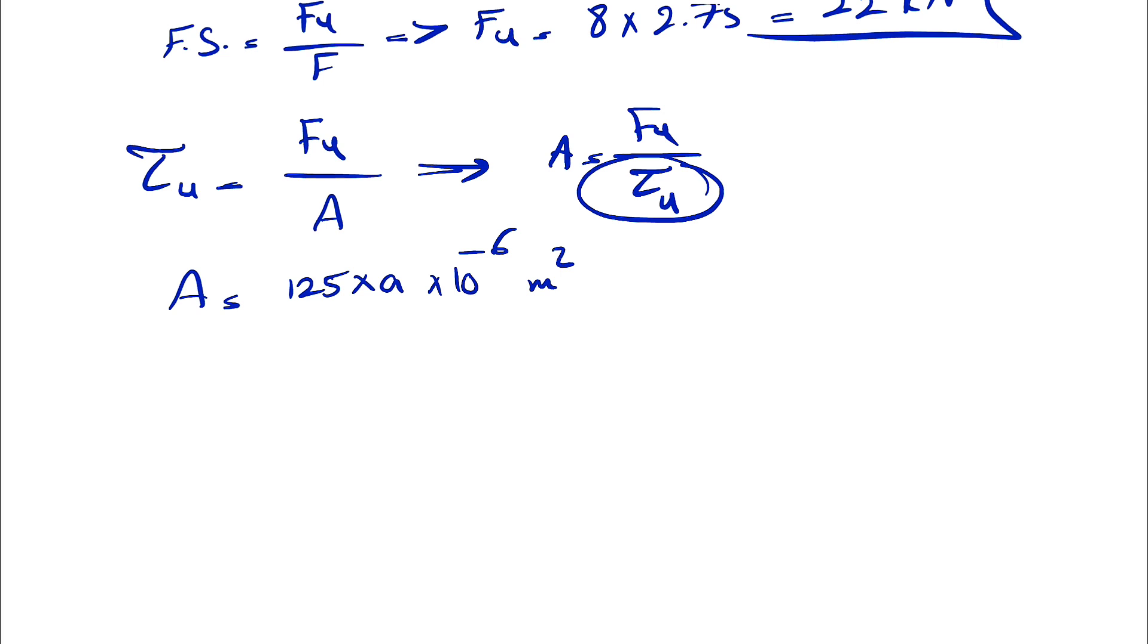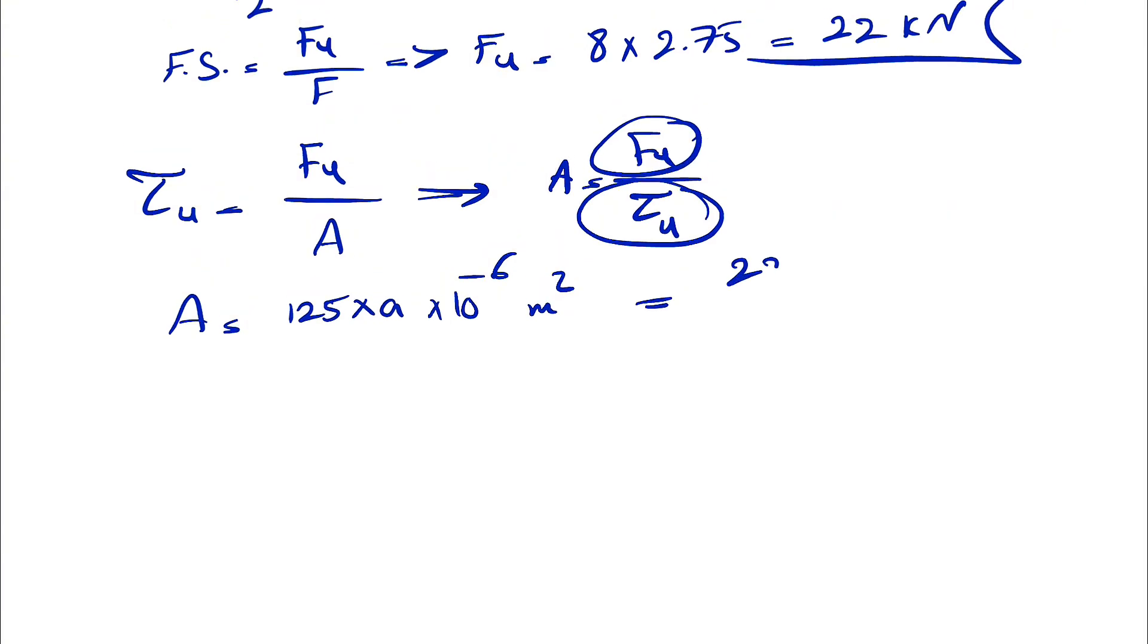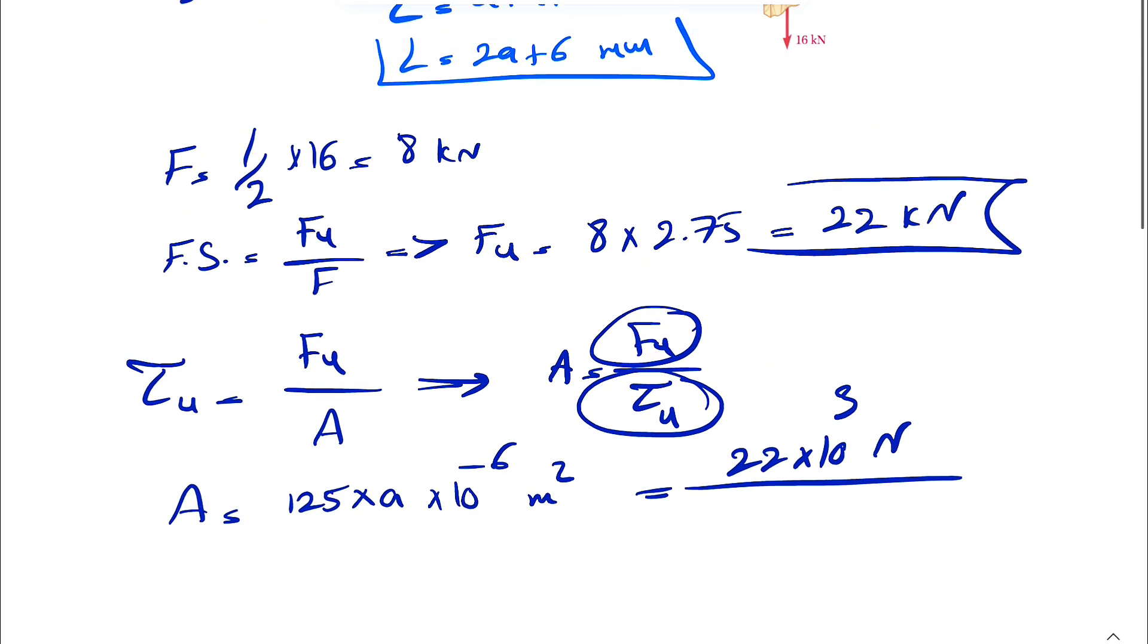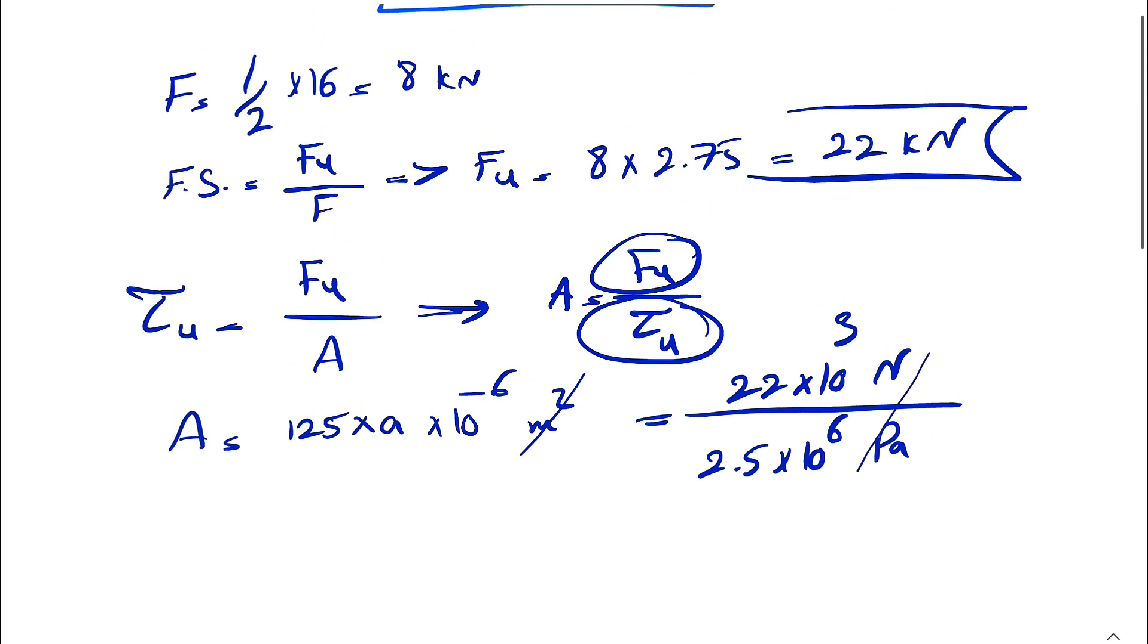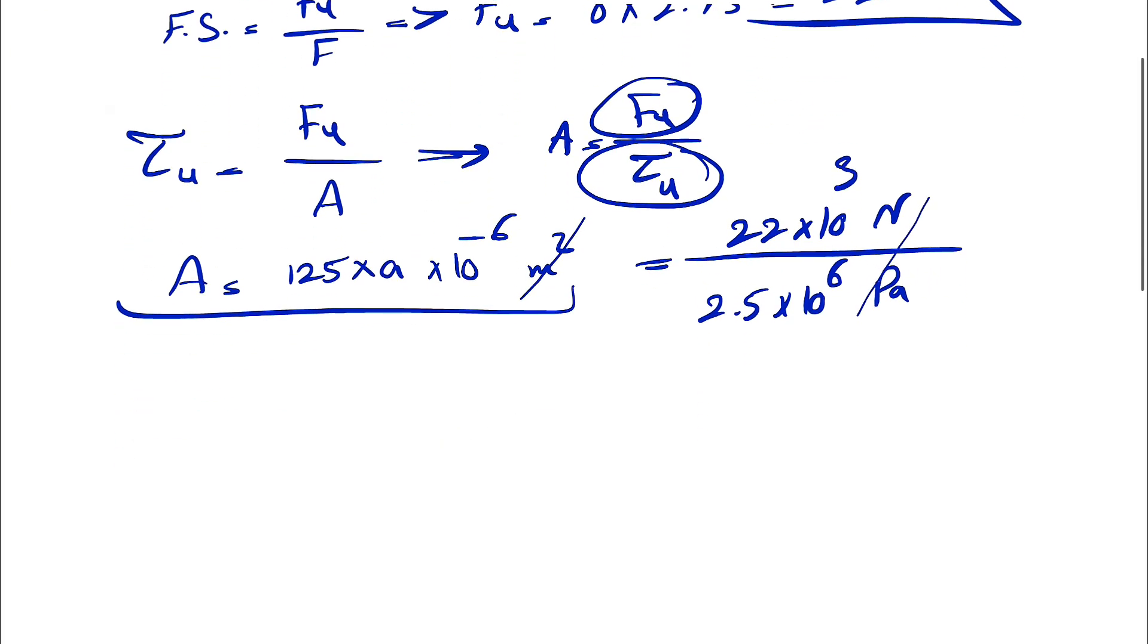Now, all we need to do is put this equal to our FU, which was 22 kilonewtons. We're going to do 22 times 10 to the 3 newtons over the ultimate shear, which is 2.5 times 10 to the 6 pascal. We're going to end up with meters squared on this side, which will be canceled with this side, and we can get our A in millimeters, since we already applied the unit conversion.